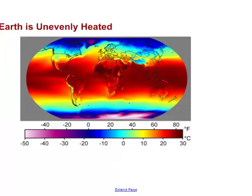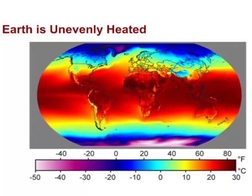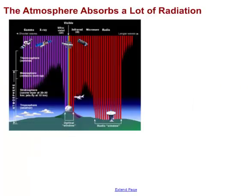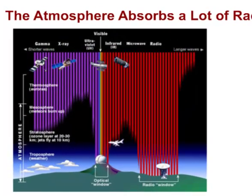Looking at the overall planet, Earth is not evenly heated — it is unevenly heated. At the equator we receive a tremendous amount of heat, whereas further from the equator it gets cooler and cooler. This big difference in temperature is what causes ocean currents and winds to move around the planet. The atmosphere plays a big role here too, acting as an absorbing cushion that absorbs a tremendous amount of the energy coming in from outer space.